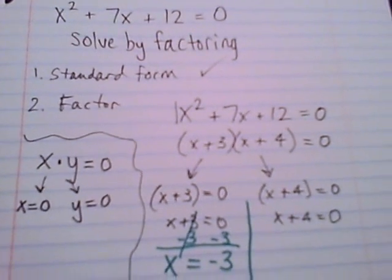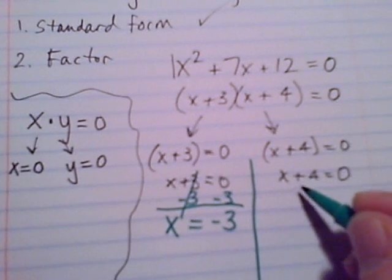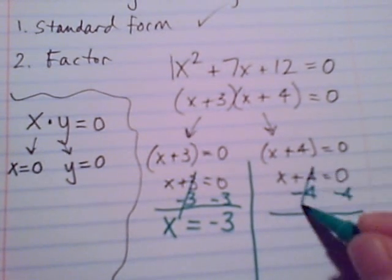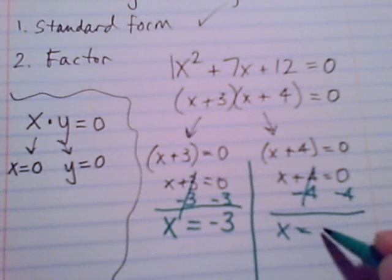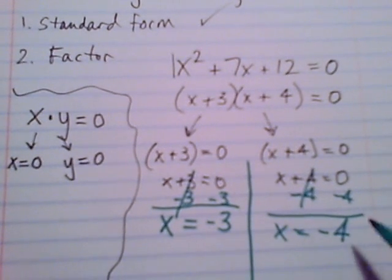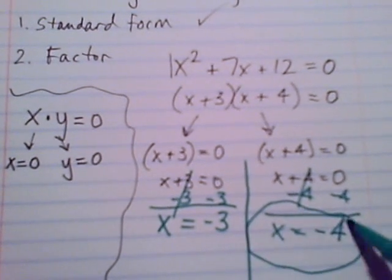On the right side, this is a little up high. Take away four both sides, x equals negative four.